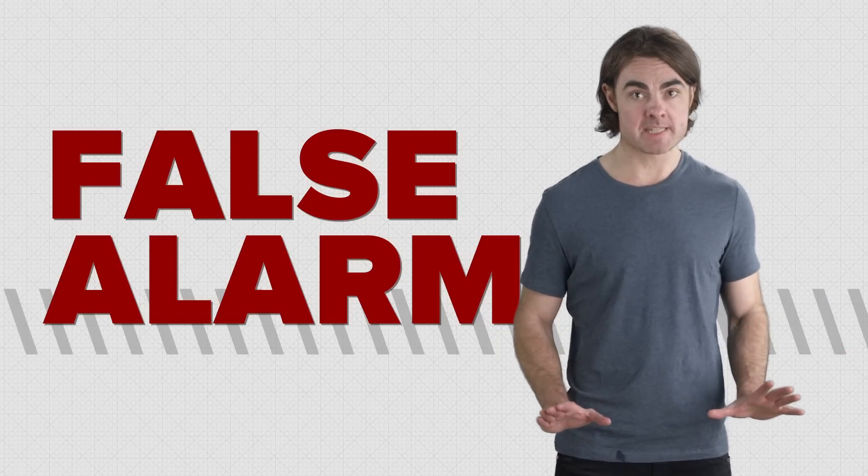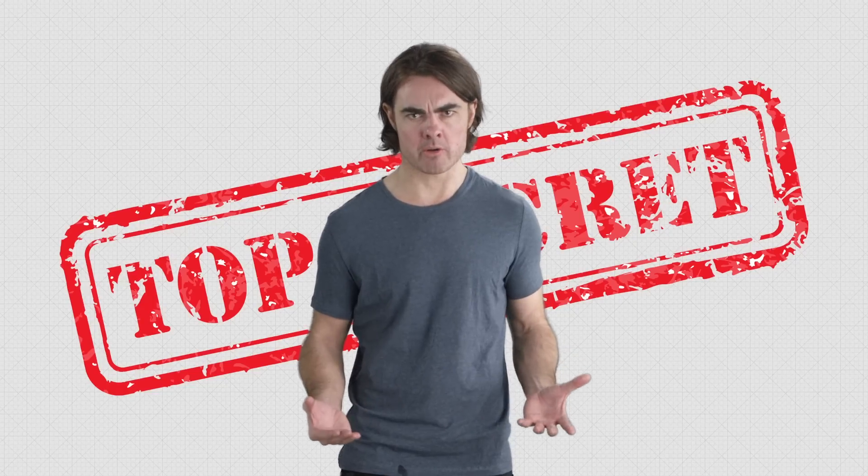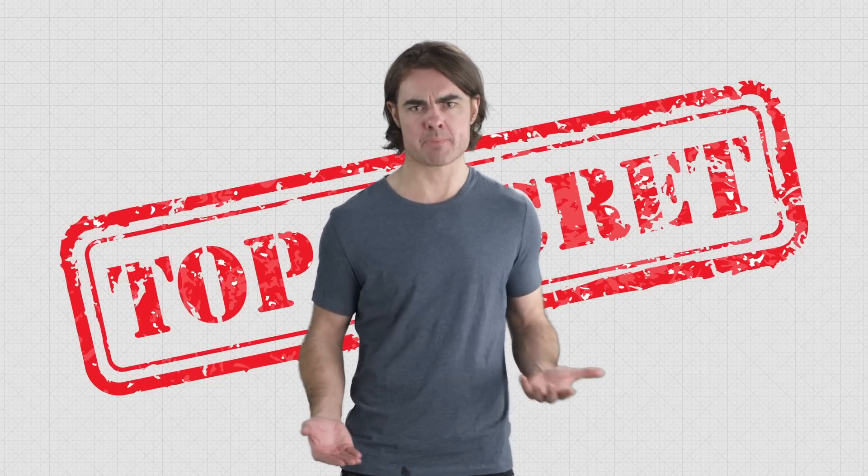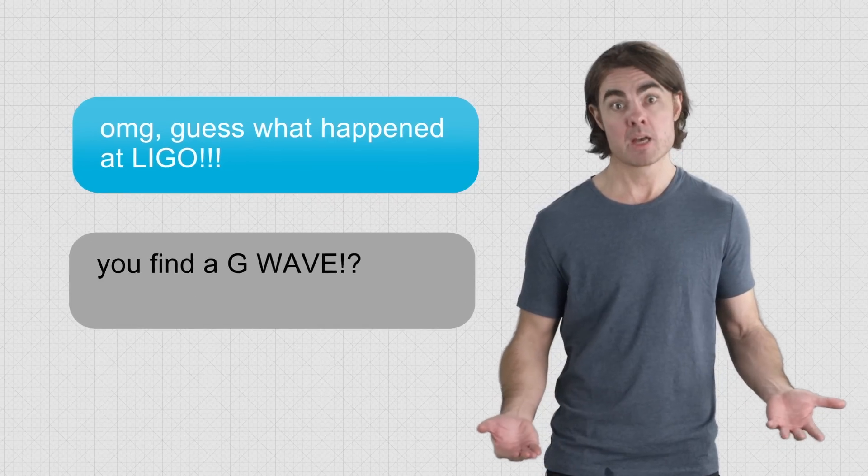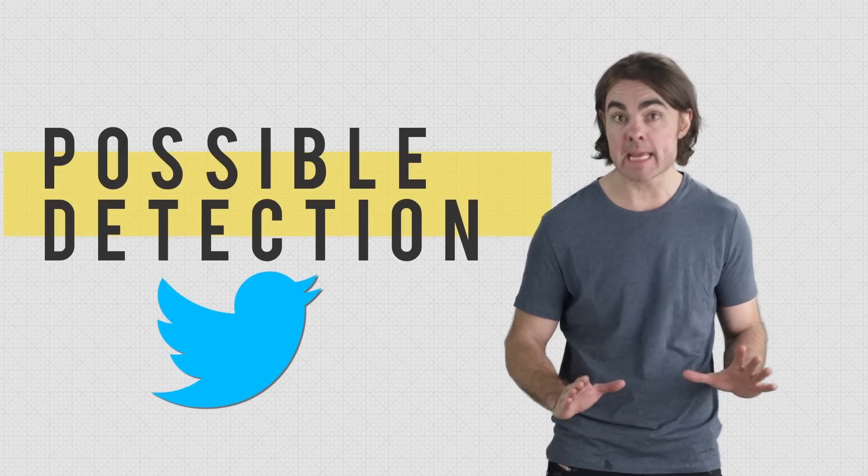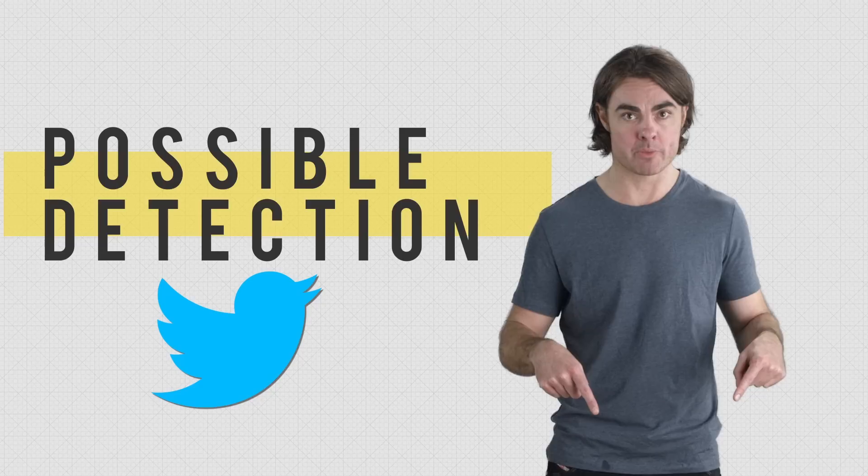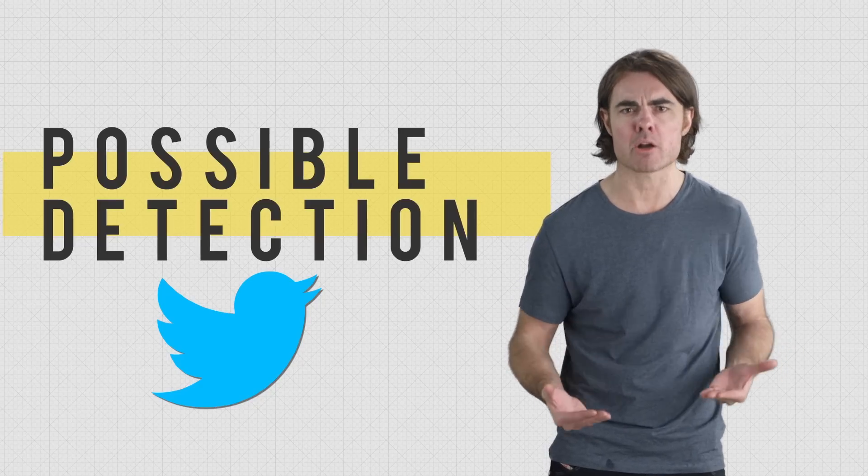Even the fake signals are meant to be secret, but hundreds of scientists work on LIGO. Wouldn't you expect someone to say something to a boyfriend, their mother, the postman, Twitter? Maybe. A rumor emerged in late September about a detection. It made some Twitter noise, and nature picked it up. Links in the description. A little birdie told me that it's the signal of two black holes in spiraling towards each other. But is it just a drill? Maybe.